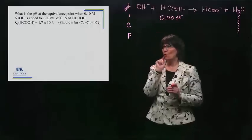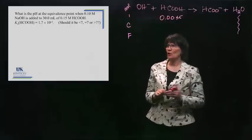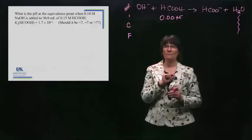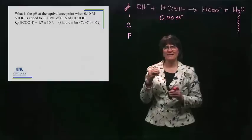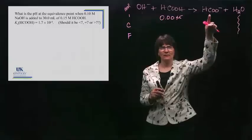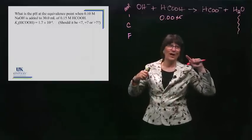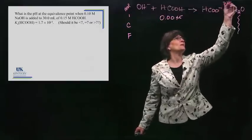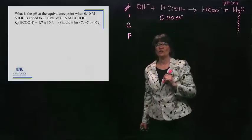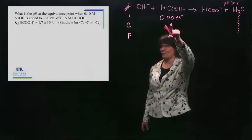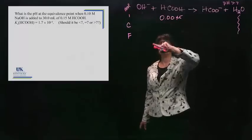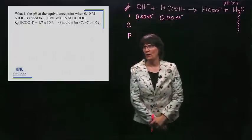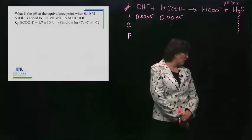At the equivalence point it's going to be a basic solution, above 7, because you've got a base in there — the strong base wins. The pH must be greater than 7. Now, it's 30 mL of 0.15 molar acid. We keep adding base until we reach the equivalence point — by definition that's when the moles of base equal the moles of acid, so it's 0.0045. We consume both the acid and the base, and we produce the formate ion.